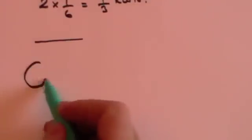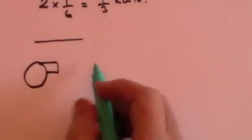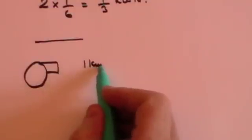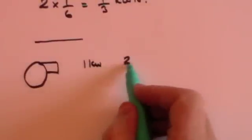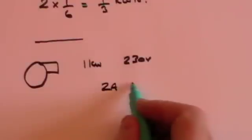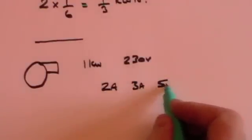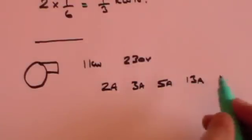We've got a hairdryer which is rated as one kilowatt, that's its power, and it's going to operate in the UK on a voltage of 230 volts and the question is what fuse should we use to make sure that that is safe. Fuses come in varying sizes you can get 2 amp fuses 3 amp fuses 5 amp fuses and 13 amp fuses.